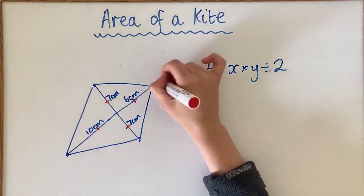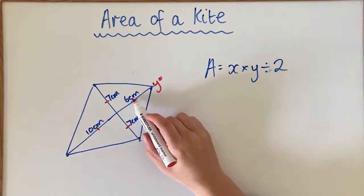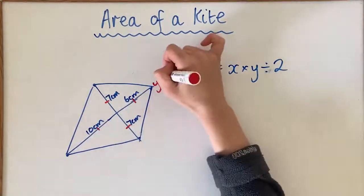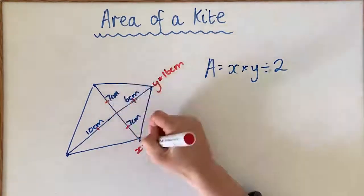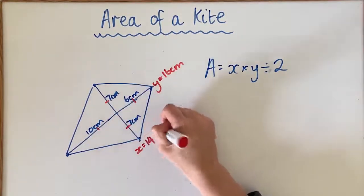So if we're calling this y, I would say that y is 6 plus 10 because it's 16 centimeters the whole way, and then for x, it's going to be the 7 and the 7, so it's going to be 14 centimeters.